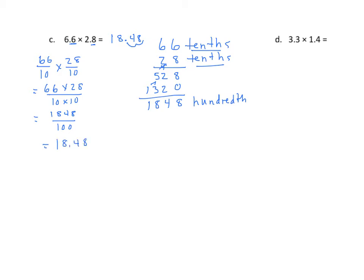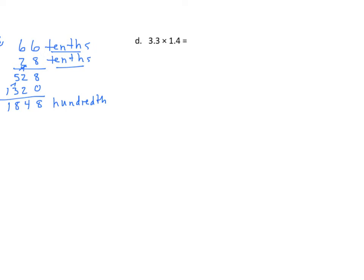Let's do the next one, just to make sure we have several examples for you to look at here. Again, we're going to use our unit forms, but we're going to lose that and get to the standard algorithm in the upcoming lessons. So I have 33 tenths — 3 and 3 tenths is 33 tenths — and I have 14 tenths. We're going to find our partial products. 4 times 3 is 12. Regroup that 1. 4 times 3 is still 12, plus 1 is 13. And we put our zero in.